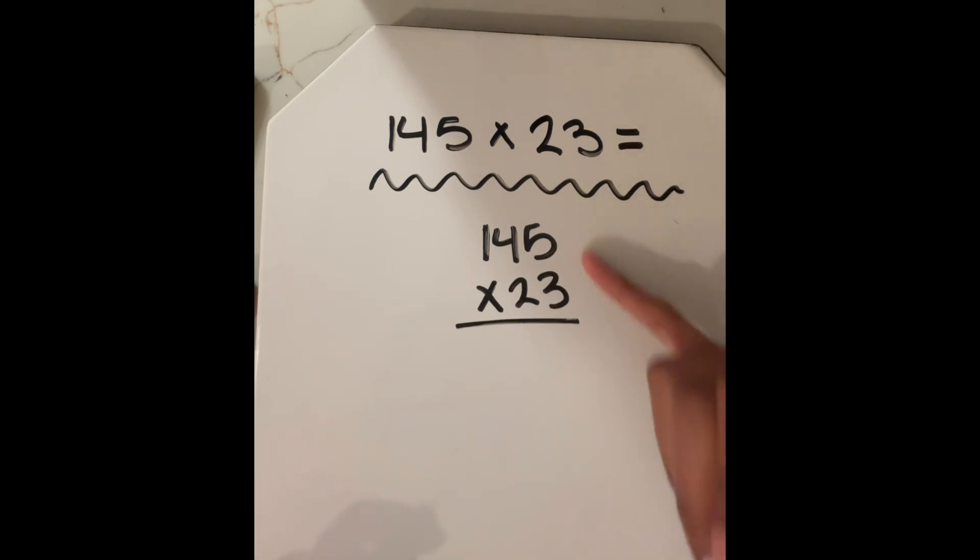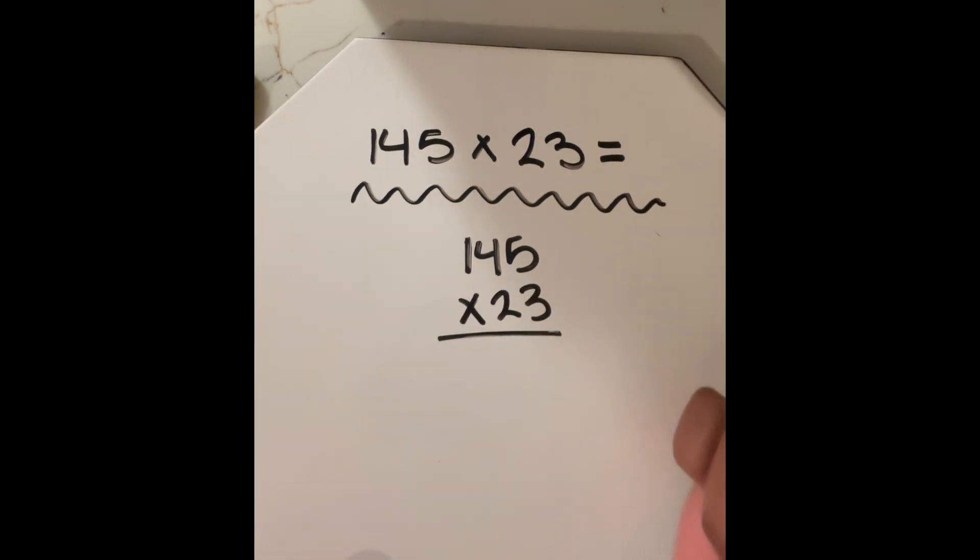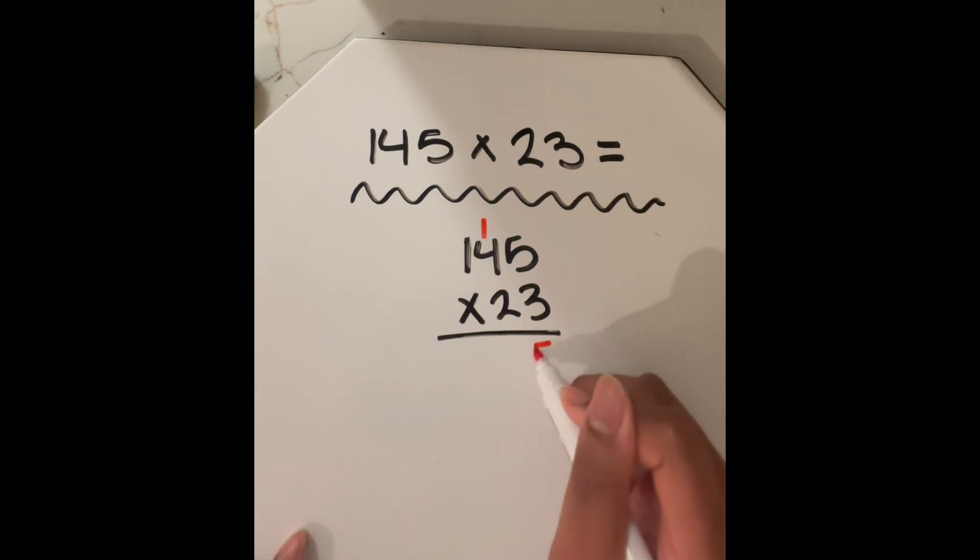And again, multiplying three times five is way easier than just multiplying this straight across in one step. So three times five is 15. We put our one up here and our five down here.